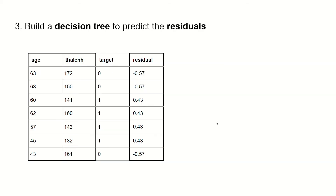Next, we build a decision tree to predict the residuals. So we use the person's age and maximum heart rate to predict the residual, and this results in the following decision tree.